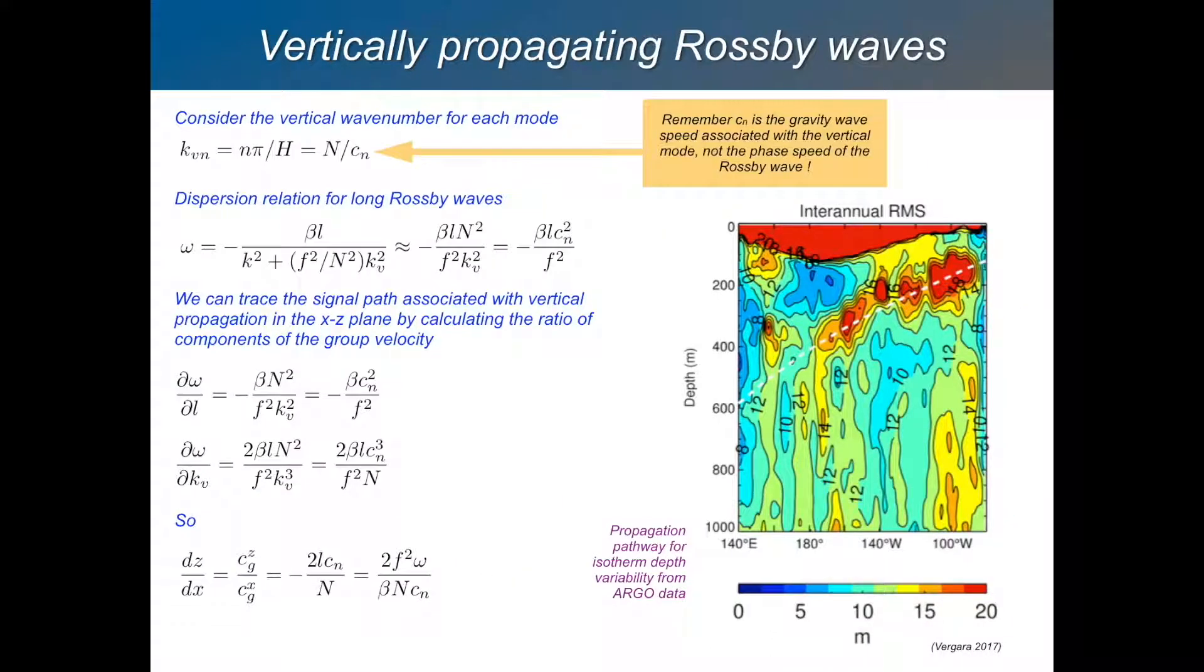Rossby waves, we talk about them propagating horizontally, right? But they have a vertical component of their propagation as well. Even though their restoring force, if you like, is in the horizontal, if they are out of phase in different layers, then they can effectively propagate with a vertical component to their propagation. So we can solve for that by just writing this vertical wave number here as N over C.